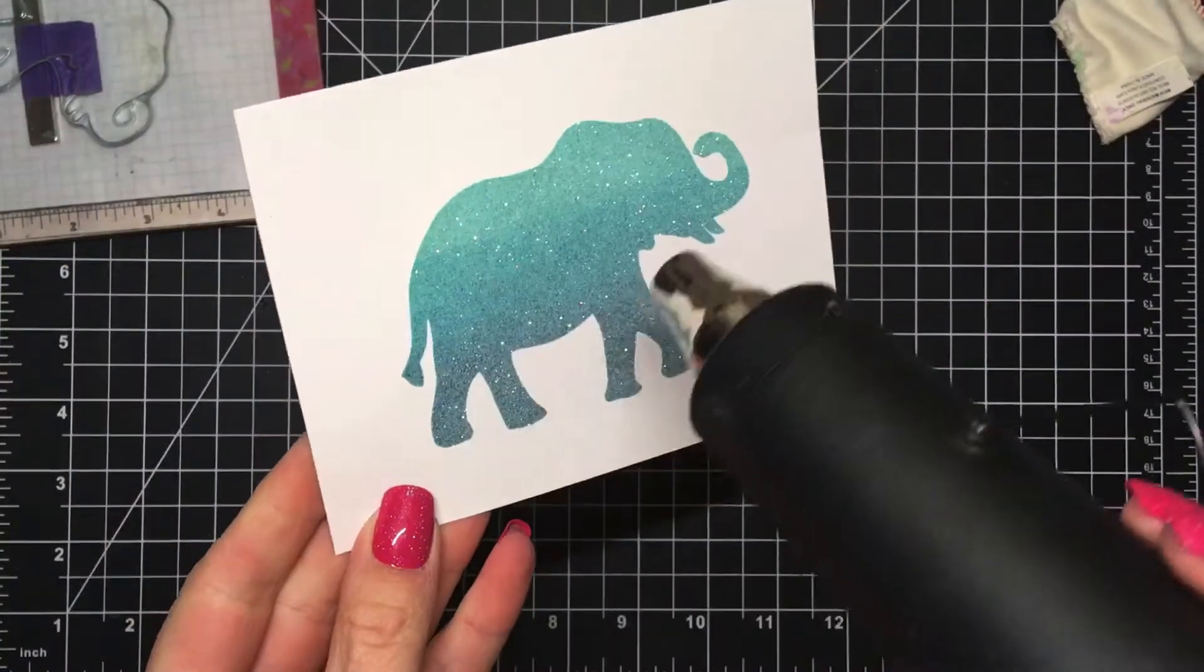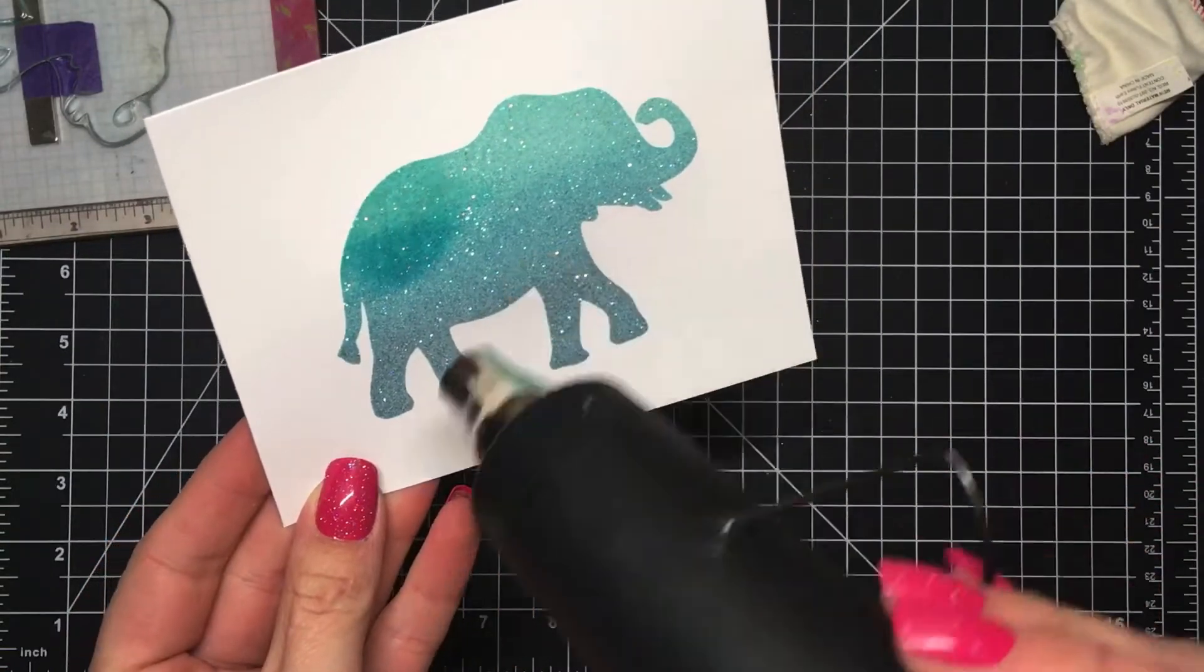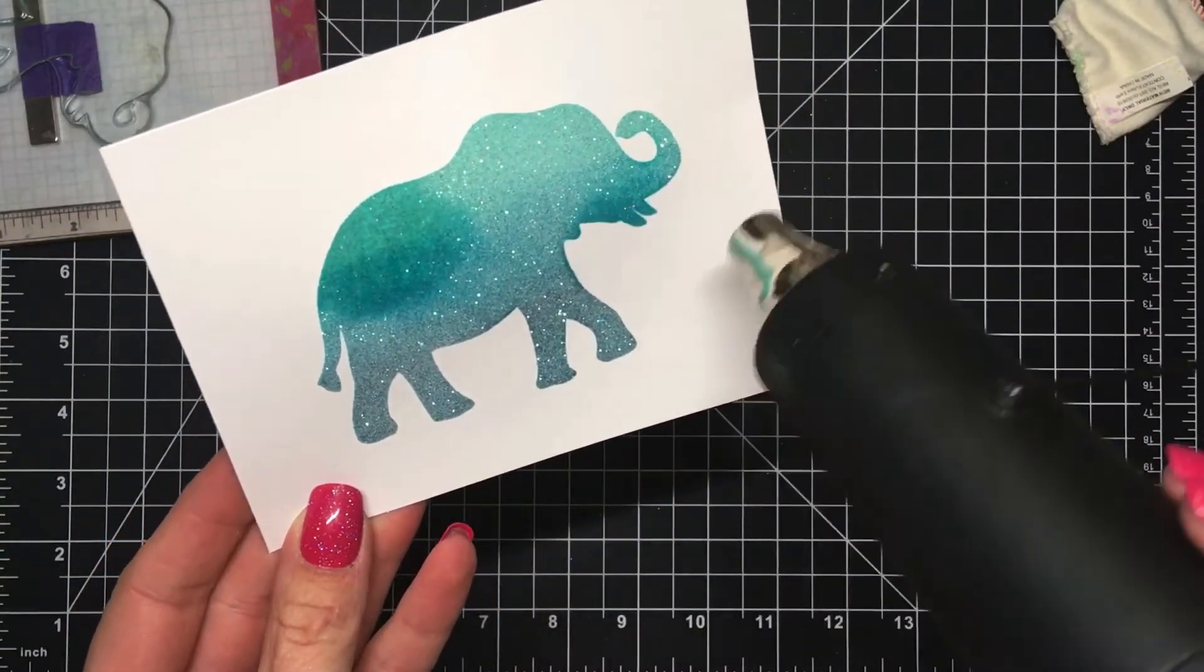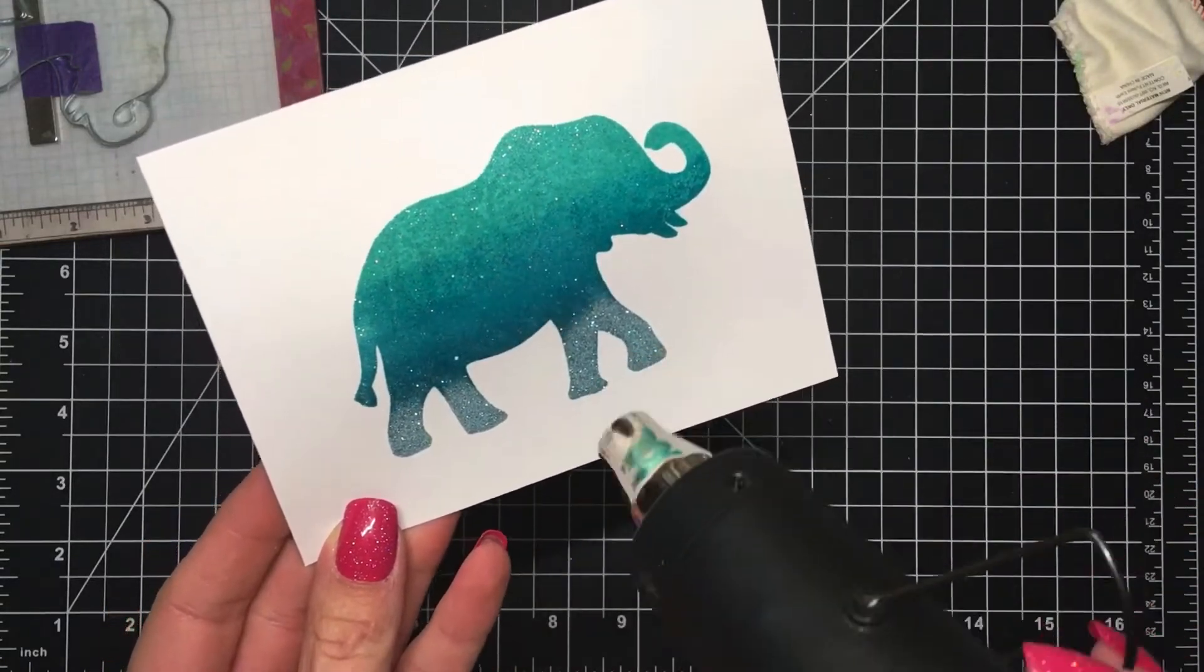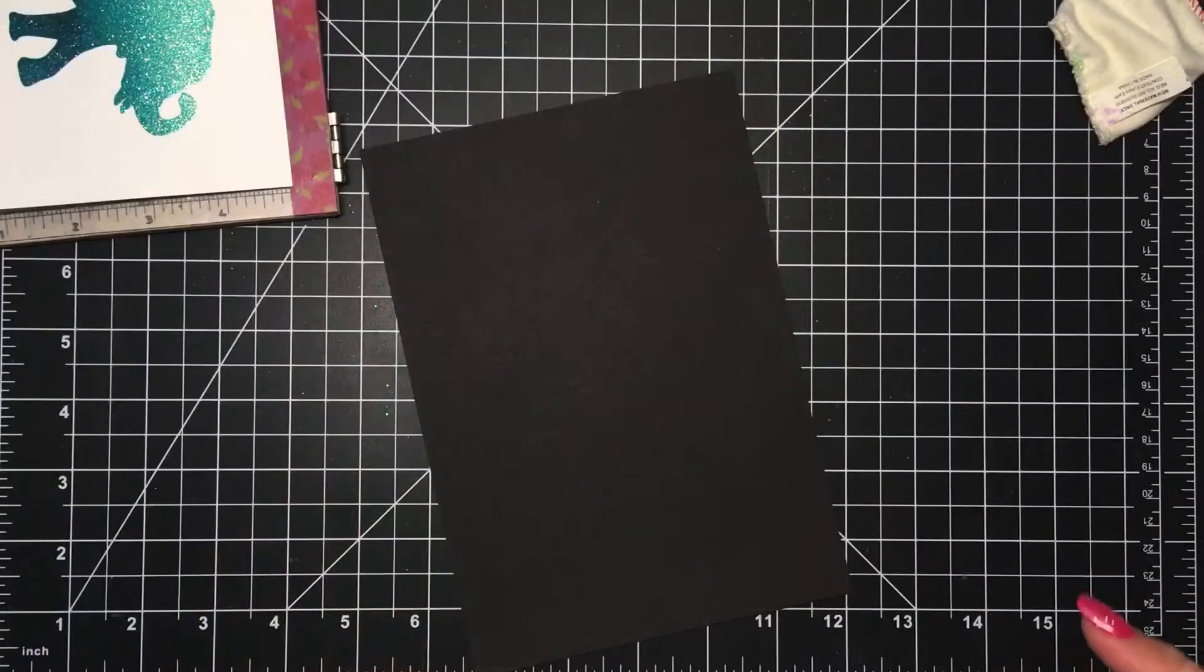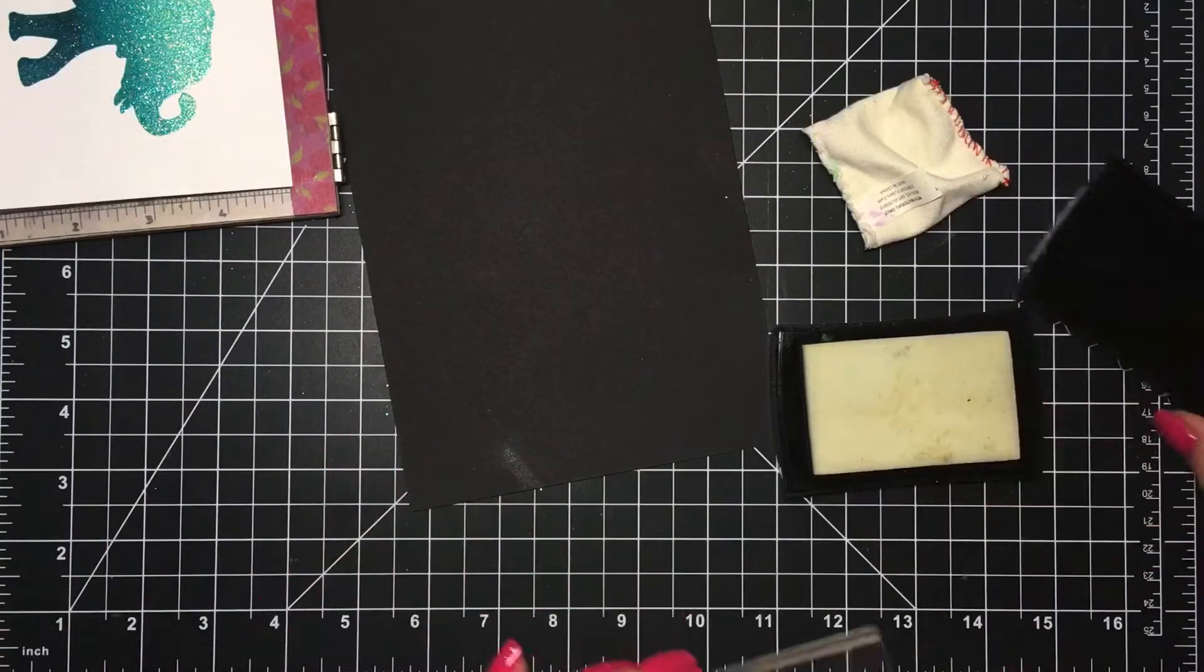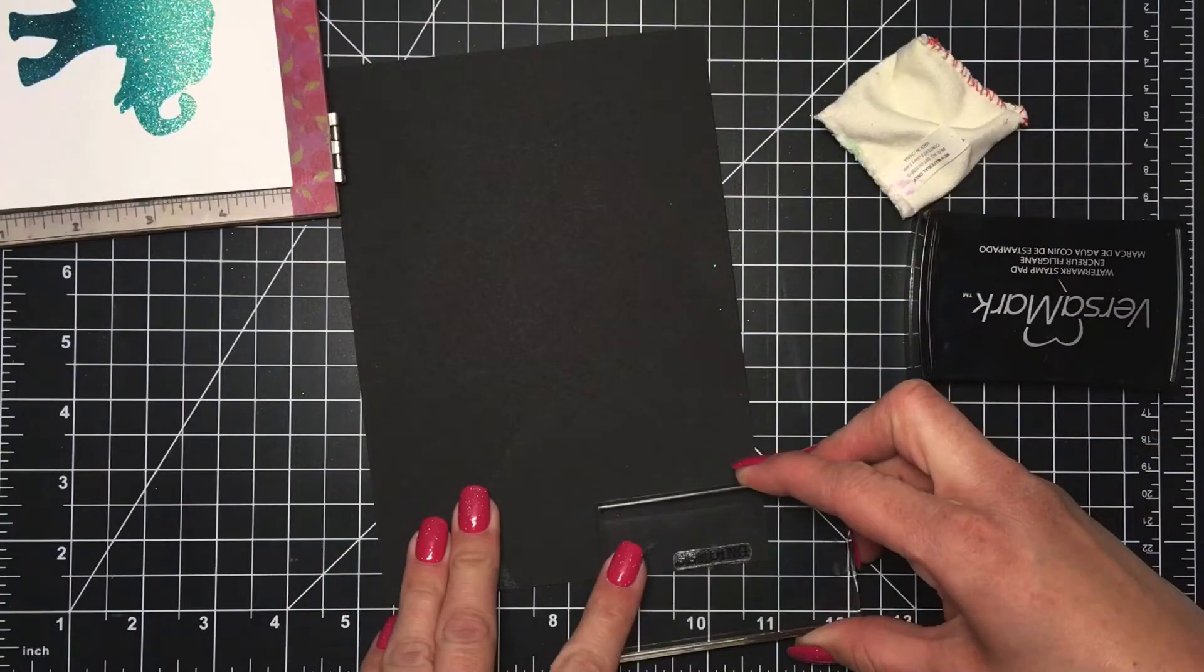I'm going to heat set that with my Wagner heat gun. Now when I have finished with that I'm using a piece of black cardstock and again my anti-static powder bag and some Versamark ink to stamp down a sentiment that says sending.